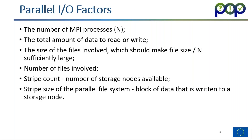The factors to consider when doing parallel I/O include: the number of MPI processes N, the total amount of data to read and write, and the size of the files involved. When doing your parallel decomposition, the file size divided by N should be sufficiently large. The number of files involved, the stripe count — which is the number of storage nodes available — and the stripe size of the parallel file system, which is the block of data written to a storage node.